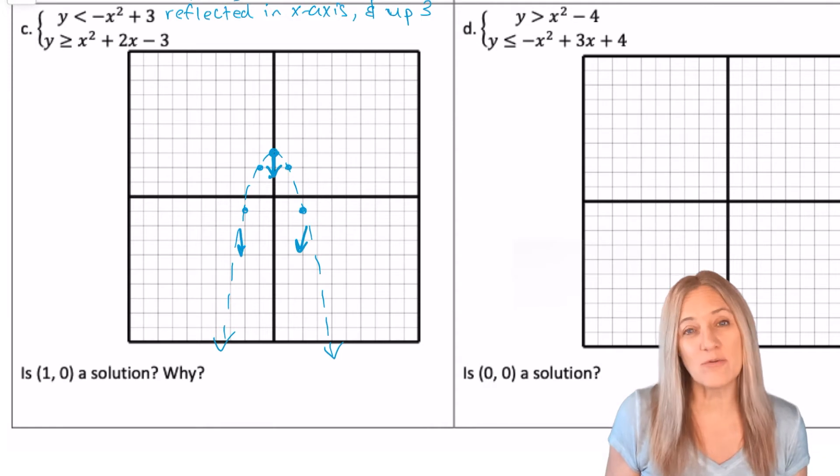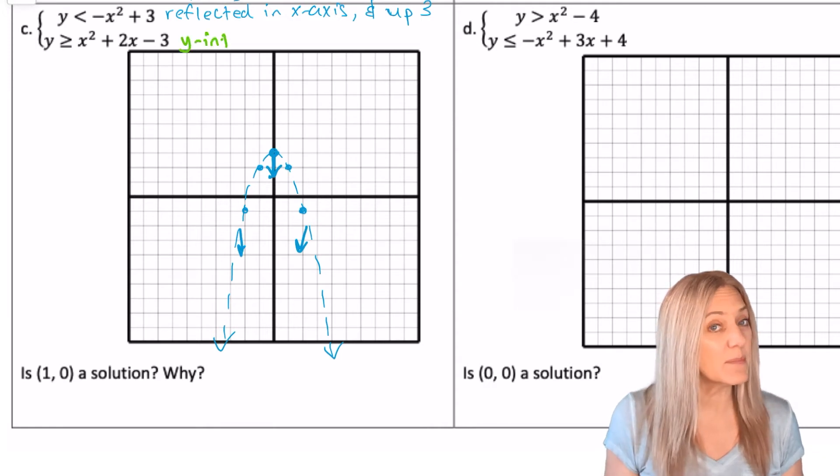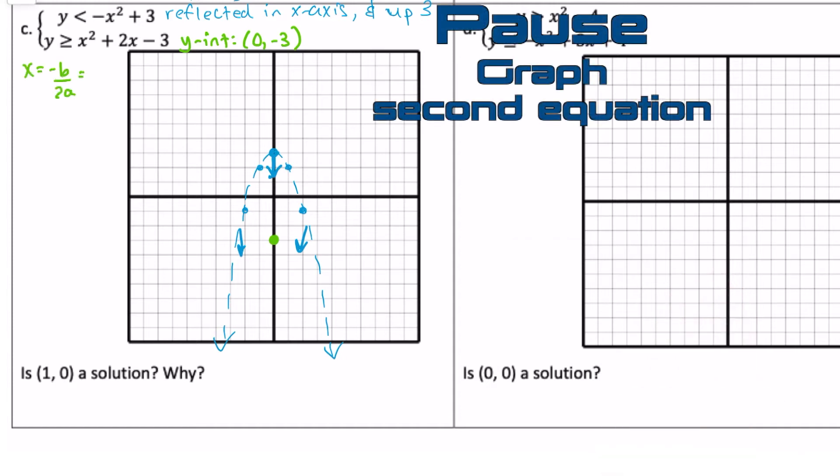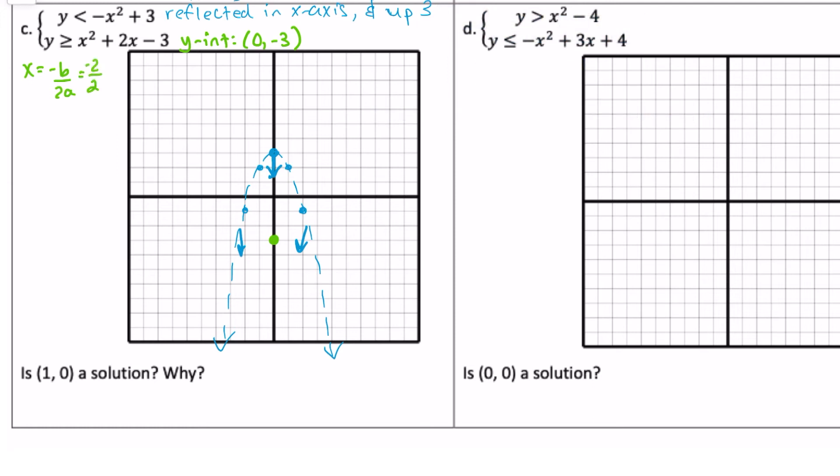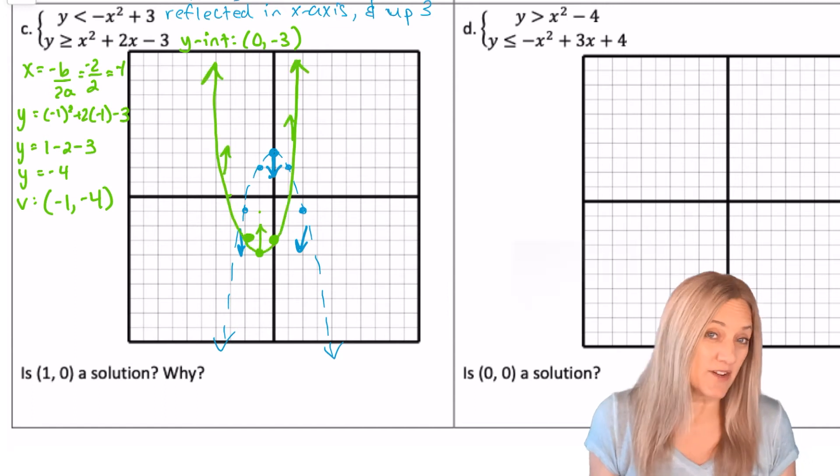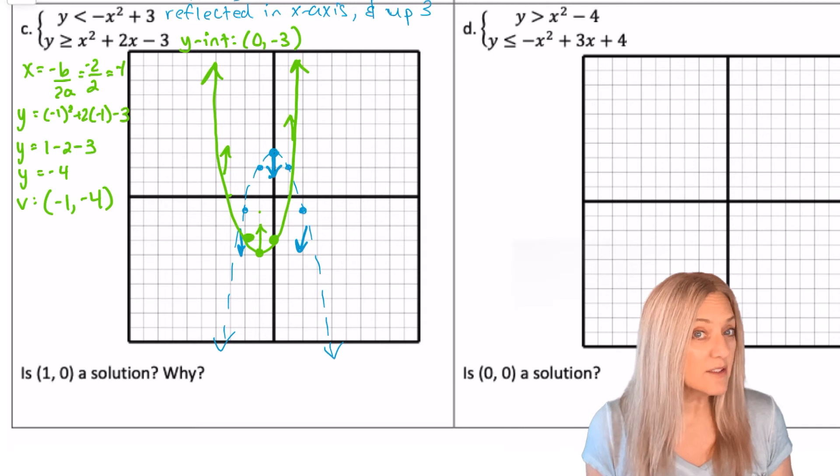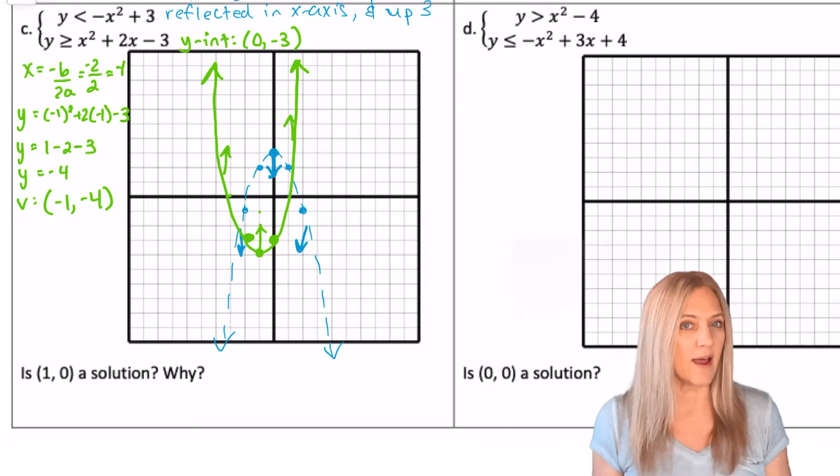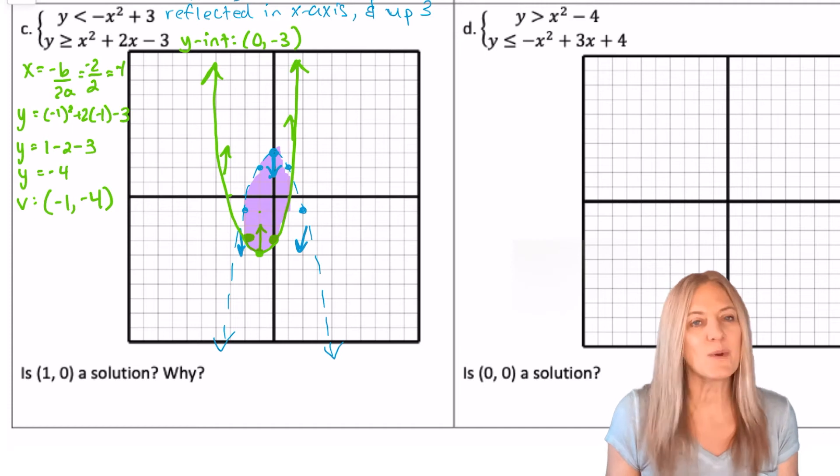But let's wait to do our shading until we get the second parabola graphed. The second one is in standard form, so we know the y-intercept immediately, but we have to find the vertex. The second quadratic is greater than or equal to, so it's a solid curve and then shaded above. So the shaded region where they overlap is that region trapped in between the two in the middle.